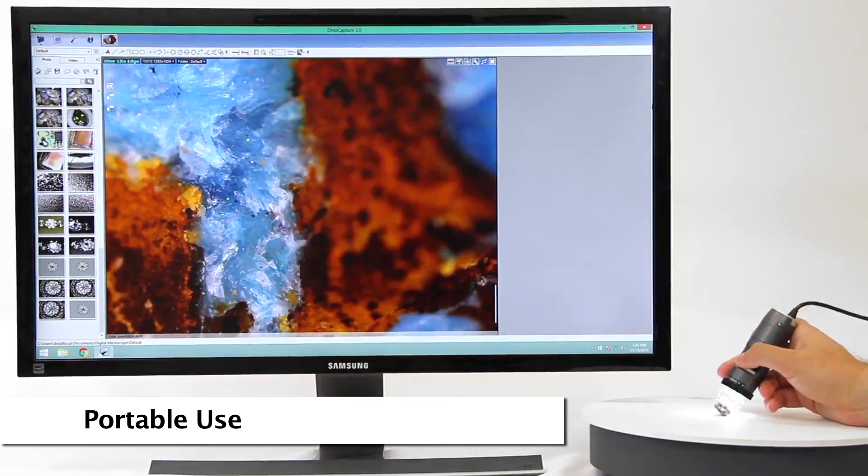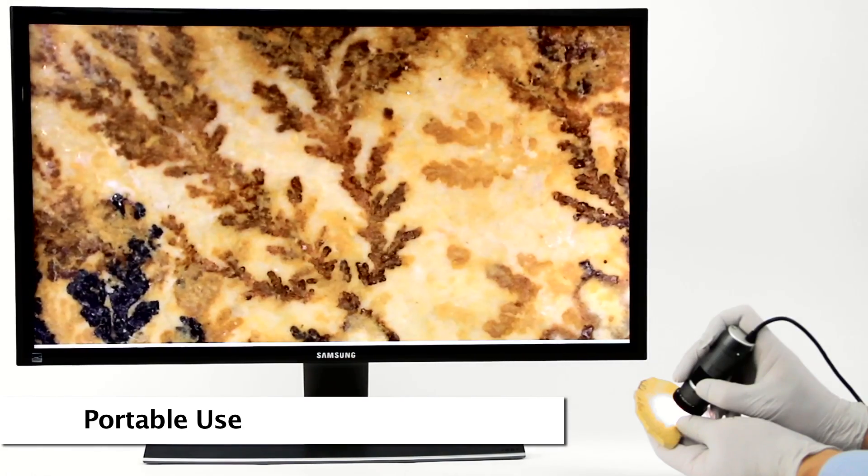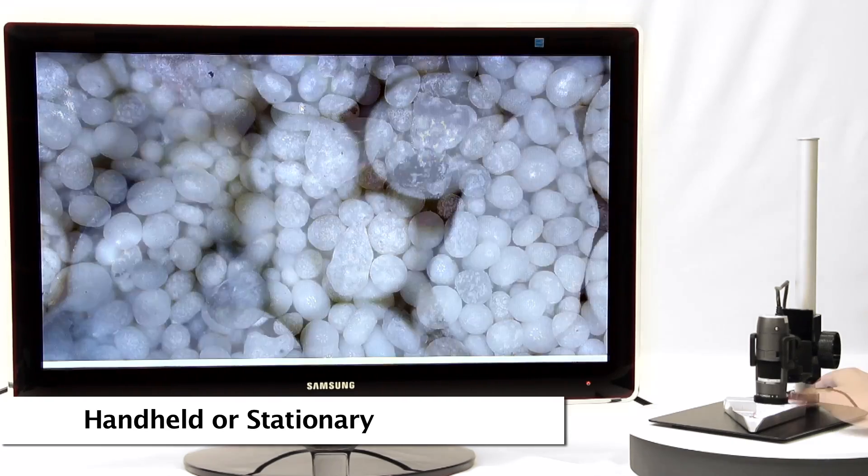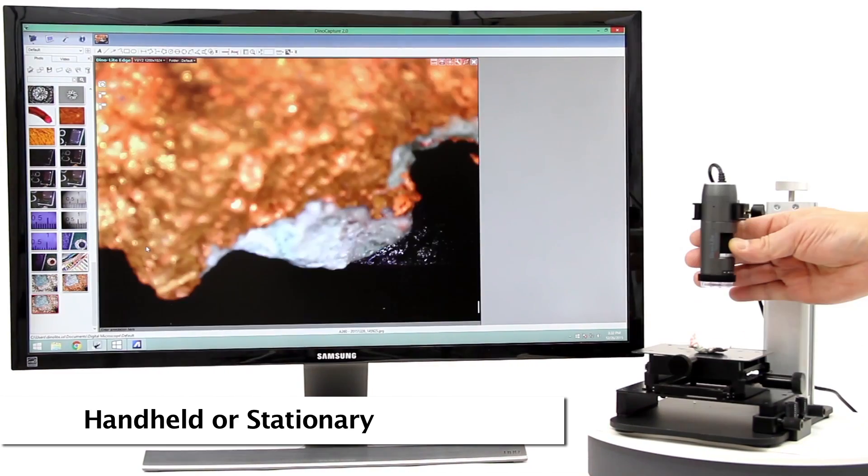The Dynolite is a handheld microscope camera with most standard models going up to 220 times magnification. These models are connected to a computer via USB and include an easy to use software that allows users to capture images and video as well as many other basic and advanced features.